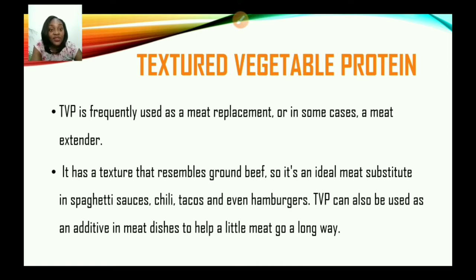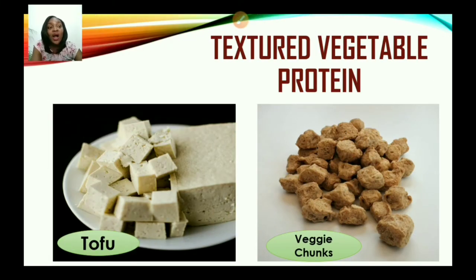It has a texture that resembles ground beef, so it's an ideal meat substitute in spaghetti sauces, chilies, tacos and even hamburgers. TVP can also be used as an additive in meat dishes to help a little meat go a long way.